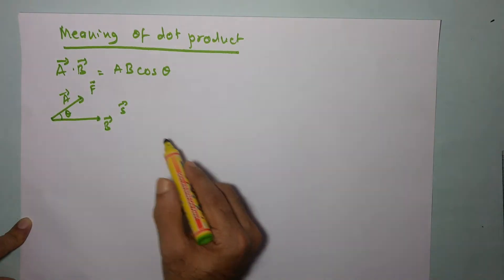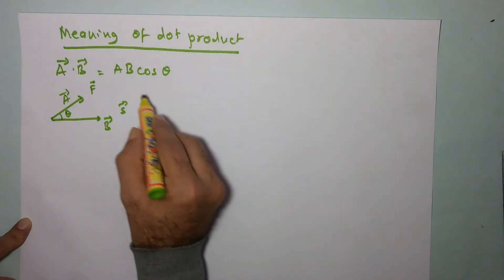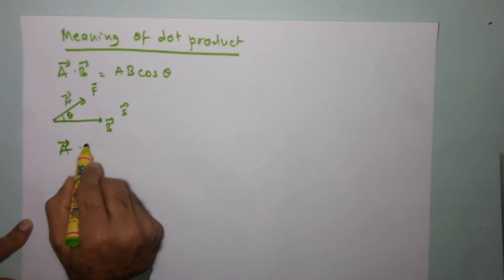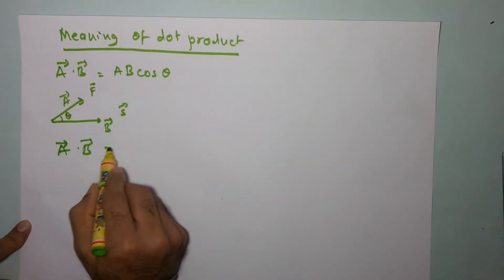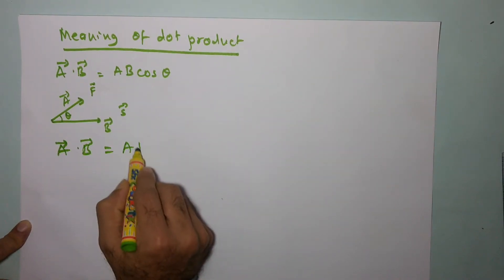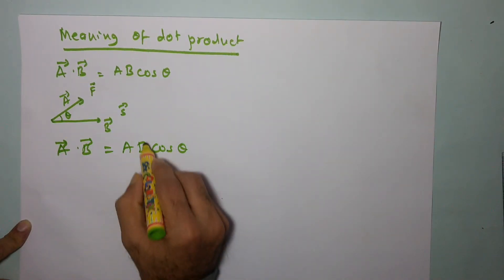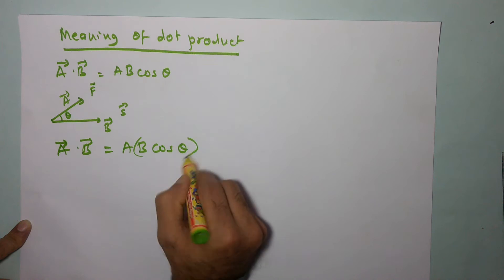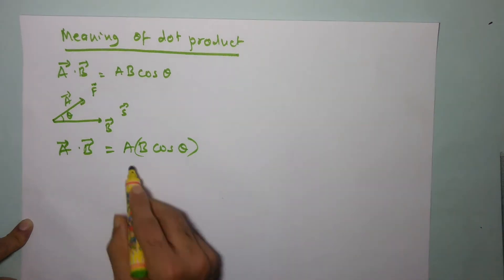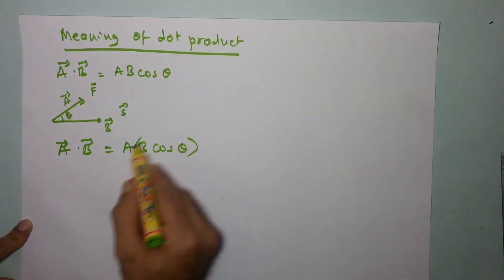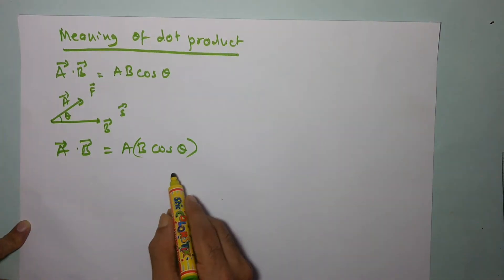So what does this ab cosθ mean? The dot product a·b, which equals ab cosθ, can be written as a multiplied by (b cosθ). I will try to understand what b cosθ is.